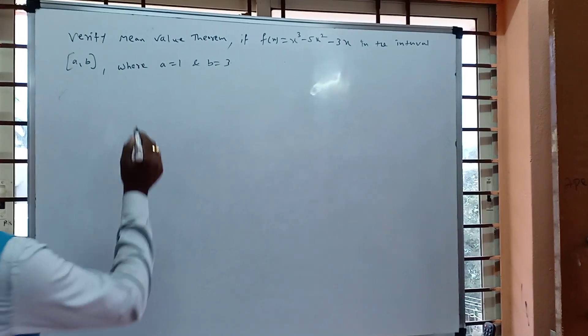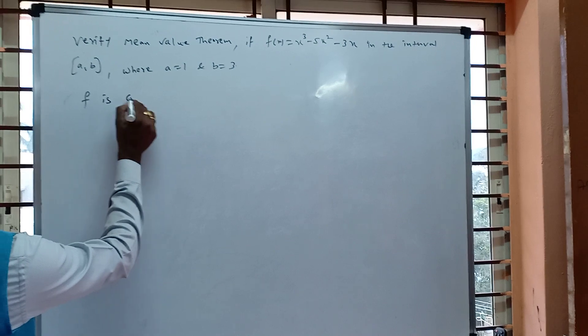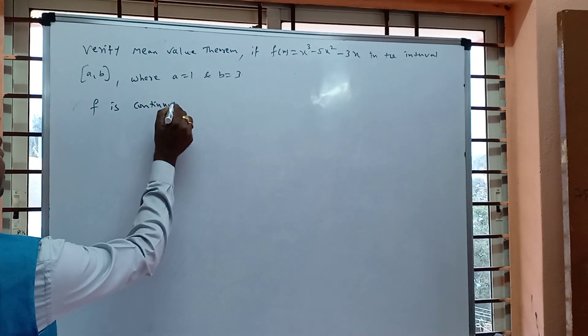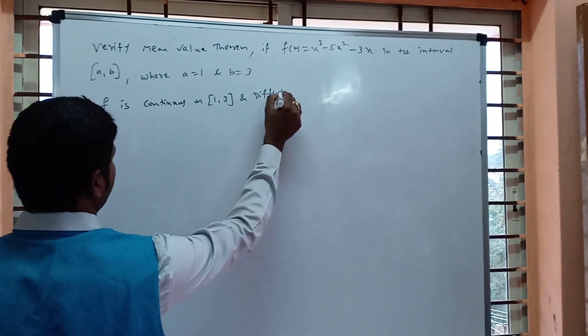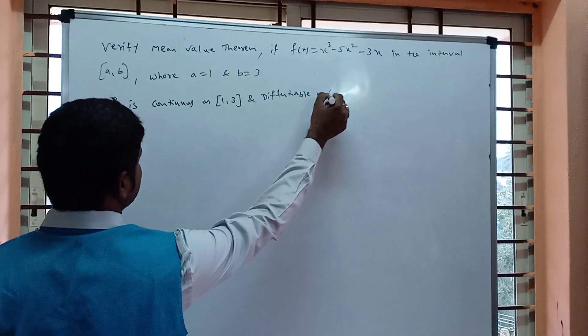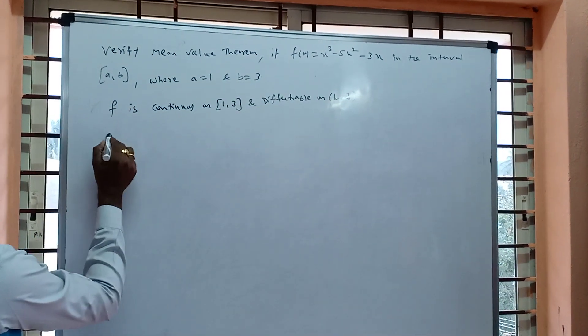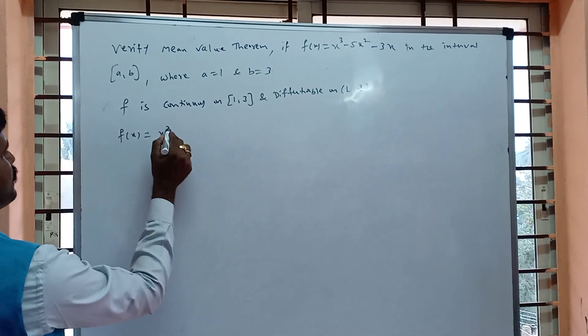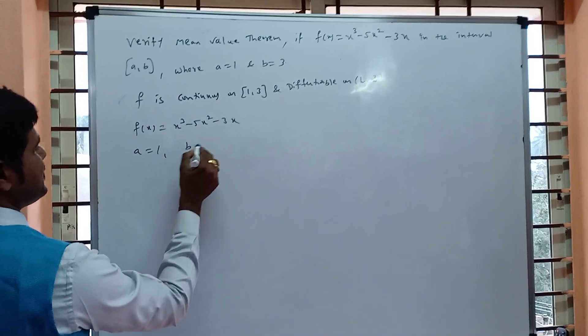How to solve this question? First we write: given f is continuous on [1,3] and differentiable on (1,3). Given f(x) = x³ - 5x² - 3x, a value is 1 and b value is 3.